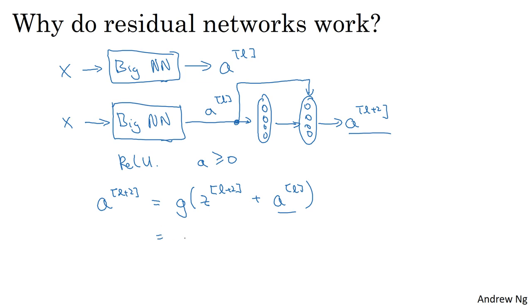And if we expand this out, this is equal to G of WL plus two times AL plus one plus BL plus two. So that's ZL plus two is equal to that plus AL. Now notice something, if you're using L2 regularization or weight decay, that will tend to shrink the value of WL plus two.